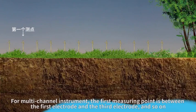For multi-channel instrument, the first measuring point is between the first electrode and the third electrode, and so on.